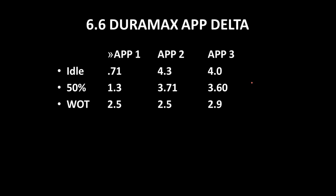Here are some typical APP values for the Duramax, which is a little different than the 6.5 diesel. We've got APP1, APP2, and APP3. At idle, number one reads about 0.7 volts, number two reads about 4.3 volts, and number three reads about 4 volts. As you step on the gas, APP number one increases — rising to approximately 1.3 volts at 50% throttle open. APP number two is dropping in value, going backwards, starting high and going low, similar to the 6.5 diesel. APP number three starts at about 4 volts and drops to about 3.6 volts at 50% throttle open.